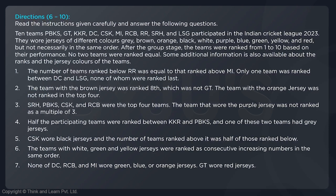They wore jerseys of different colors: gray, brown, orange, black, white, purple, blue, green, yellow, and red — but not necessarily in the same order. After the group stage, the teams were ranked from one to ten based on their performance, and no two teams were ranked equal, so every team had a different rank.